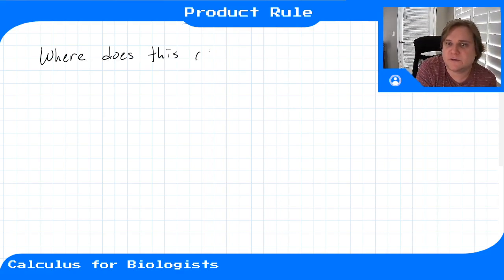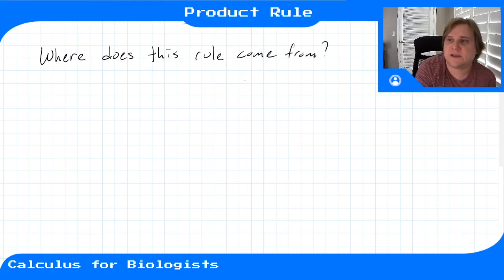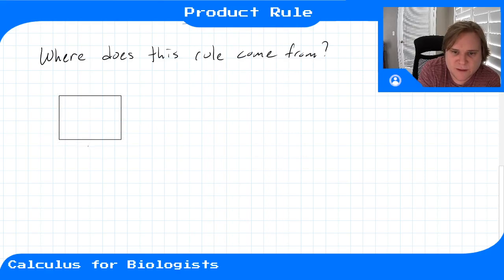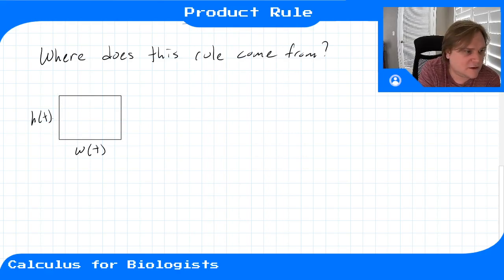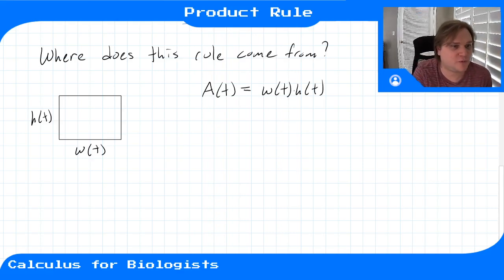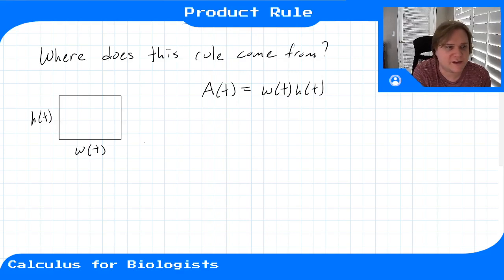Where does this rule come from? Let's say we had a rectangle with width w of t and height h of t. The area of this rectangle is the width times the height — it's a natural product function of these two separate functions, which maybe are growing at different rates.